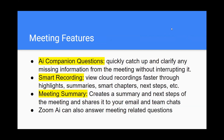Meeting features: the first is AI Companion Questions, used to quickly catch up and clarify any missing information from the meeting without interrupting it. Smart Recording lets you view cloud recordings faster through highlights, summaries, smart chapters, and next steps. Meeting Summary creates a summary and next steps of the meeting and shares it to your email and team chat. Zoom AI can also answer meeting-related questions.